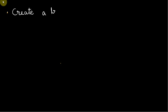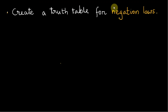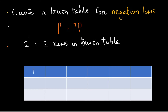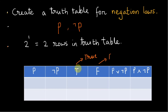The second logical equivalence we want to prove is the negation laws. We create a truth table for negation laws. There is only one variable P and its negation, but we cannot take negation as a second variable, so 2 raised to 1 equals 2 rows. The columns are P, not P, true, false, P or not P, and P and not P. The true and false here are truth values representing universal true or false statements.